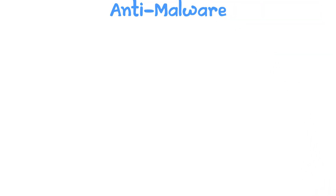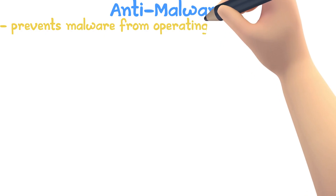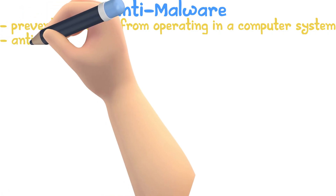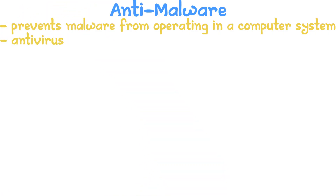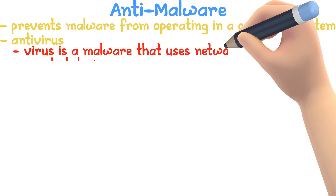Anti-malware prevents malware from operating in a computer system and allows users to scan their files or system. Anti-malware can be classified into three main types. The first is antivirus: a virus is a type of malware that uses networks to spread to connected devices.